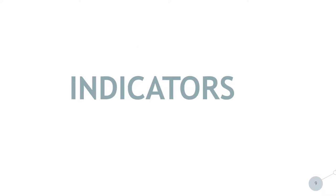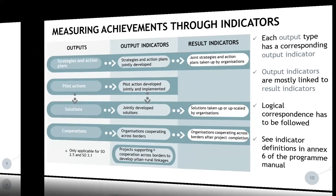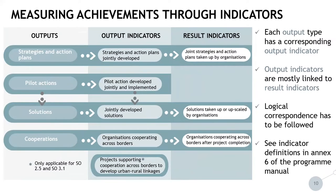Coming now to the indicators — the main question being how to measure the achievements of a project, which is done through a set of indicators. For each of the four output types there is a corresponding output indicator. For example, strategies and action plans have the related output indicator 'strategies and action plans jointly developed.' In the same logic, there is also a related result indicator — in this case, 'joint strategies and action plans taken up by organizations.' This logical correspondence is to be followed.